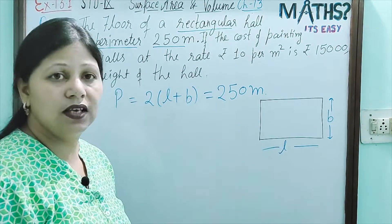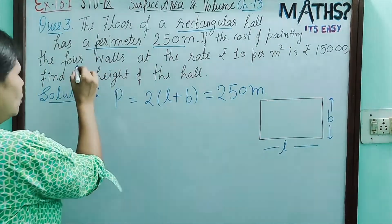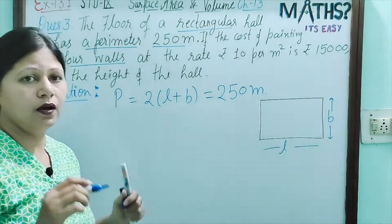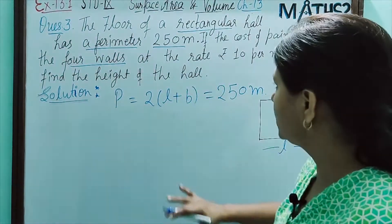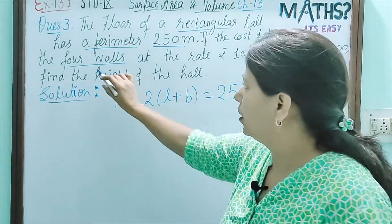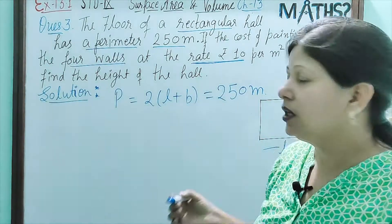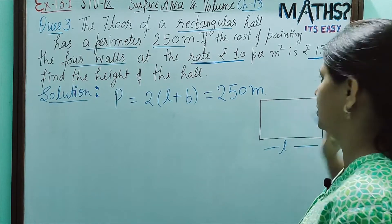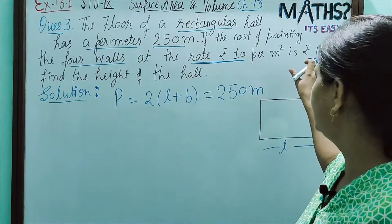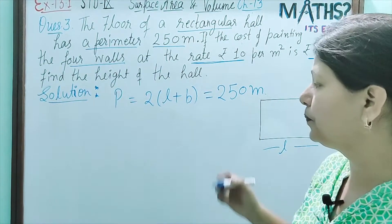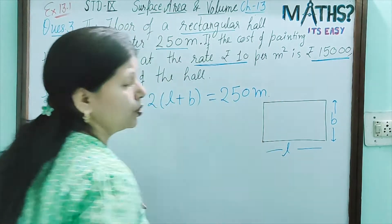Next, what else is given here? If the cost of painting the 4 walls of the hall at the rate of rupees 10 per metre square, the total cost is rupees 15,000. So, we need to understand how we will use this rate and total cost — let us understand with the help of a situation.